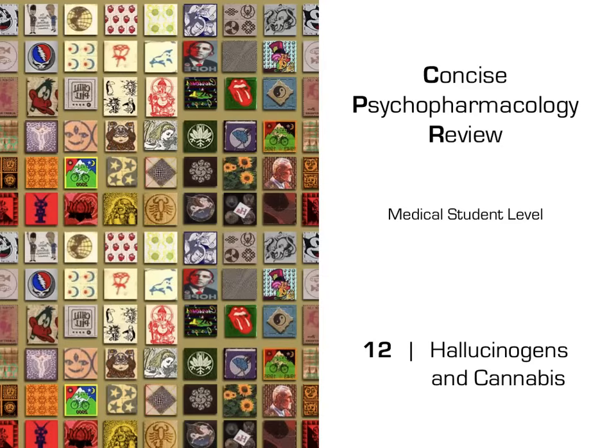The final group of recreational drugs we will cover are the hallucinogens, along with cannabis, which is not classified as a hallucinogen but does not fit well into any other category. In contrast to stimulants and depressants, hallucinogens do not follow your traditional sympathetic versus parasympathetic rules.